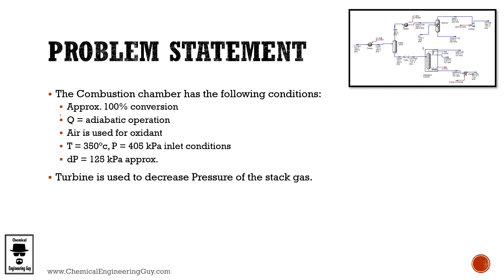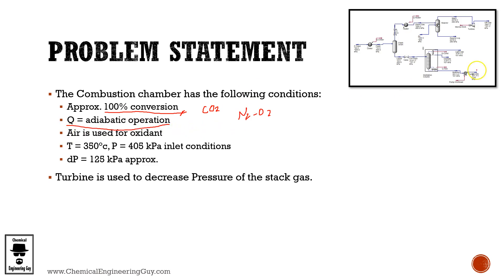Regarding the combustion chamber — this information is not always provided to a process engineer, so it is common that you don't know exactly what's happening and must assume certain conditions. In this specific case, we assume 100% conversion to CO2, meaning anything that contains carbon will be converted to CO2. Therefore, we need air, which is a mixture of nitrogen and oxygen. Operation is adiabatic — we don't want to cool down our reactor.